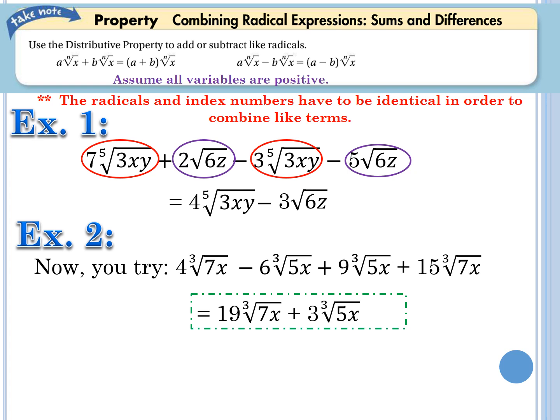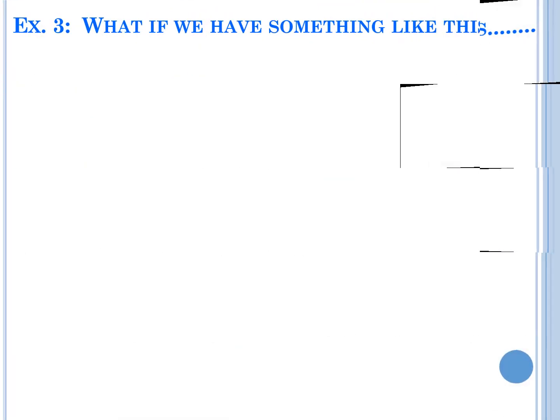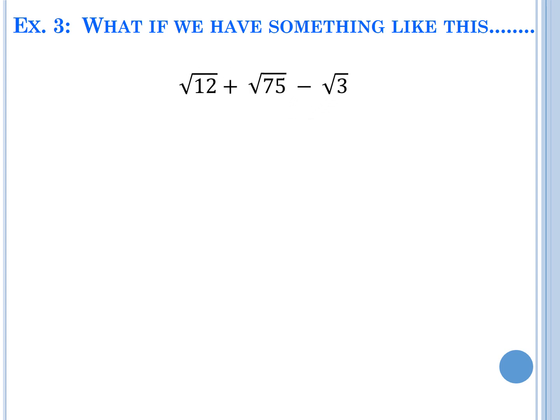If you have questions, you can pause the video and Mr. Wildower can answer those for you. Let's look at example three, because our examples are not always going to be so easy where the like terms are blatantly obvious. What if we have a scenario where they're not the same, but we can simplify them? We have the square root of 12 plus the square root of 75 minus the square root of 3. None of these are alike at first glance, but they can all be simplified — they're all square roots.